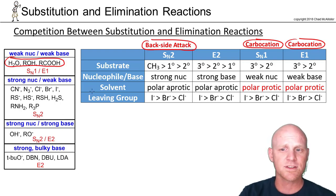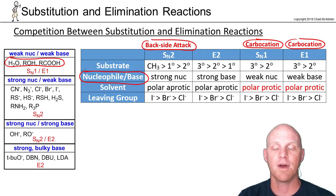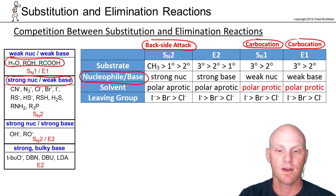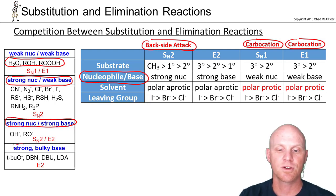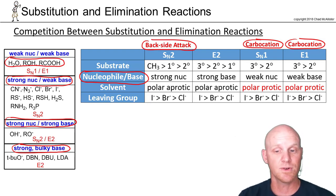Your nucleophile or base will be the single biggest determining factor of what mechanism you're doing. A weak nucleophile or weak base leads to SN1 and E1. But there are also strong nucleophiles that are weak bases, strong nucleophiles that are also strong bases, and strong bulky bases that are not really good nucleophiles. A strong nucleophile can do SN2; a strong base can do E2.